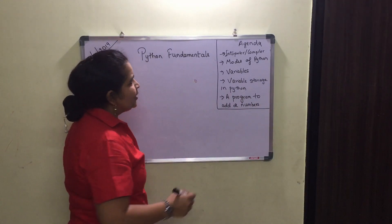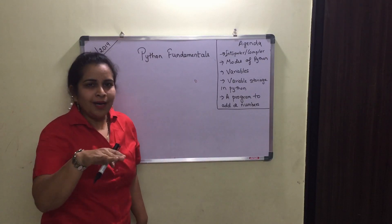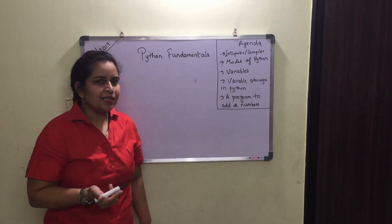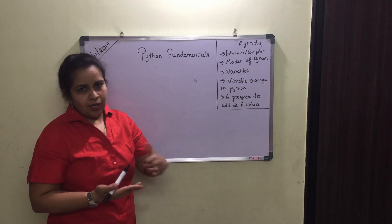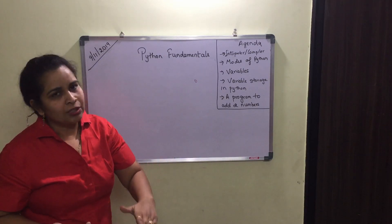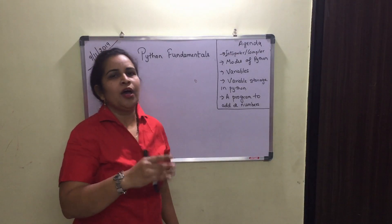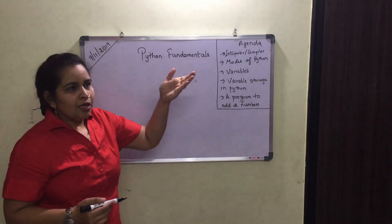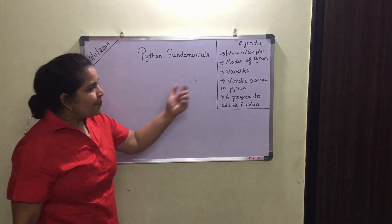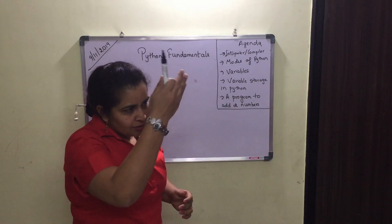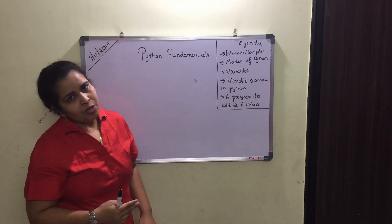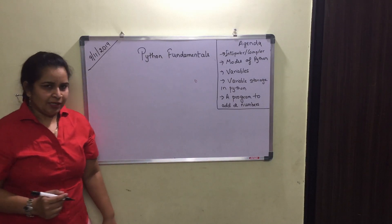An interpreter is a software that reads the code one line at a time. It checks the first line — if it is correct, it will execute it, then move to the second line. If an error is found, it will display the error and you have to rectify it. Python is an interpreted language which executes one line at a time. A compiler, by contrast, reads the whole code and displays a list of errors; only after rectifying all errors does the code get executed. But Python is an interpreter language.